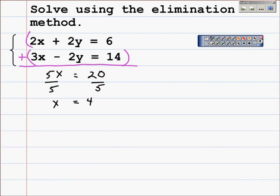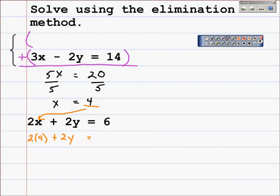Now we need to substitute that into one of the original equations. It doesn't matter which one; anyone will do. We're going to substitute this 4 in for the x, giving us 2 times 4 plus 2 times y equals 6. Multiply these two together: 8 plus 2y equals 6.